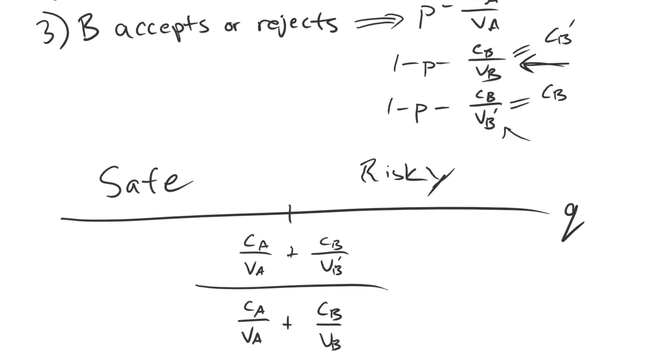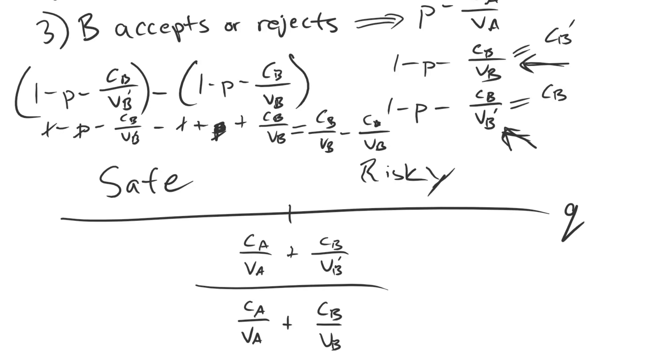We have these war payoffs for the actors. The difference between them is the peace premium. This is the high valuation type's payoff for war, and this is the low valuation type's payoff for war. If you just distribute out the negative sign on the right side, you get minus 1 plus P plus CB over VB. The 1 cancels, the P's cancel, and so your peace premium is equal to CB over VB minus CB over VB prime.